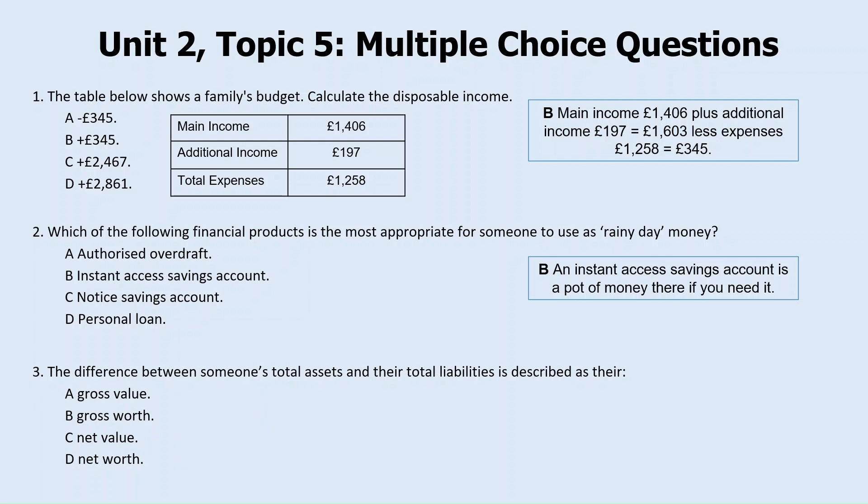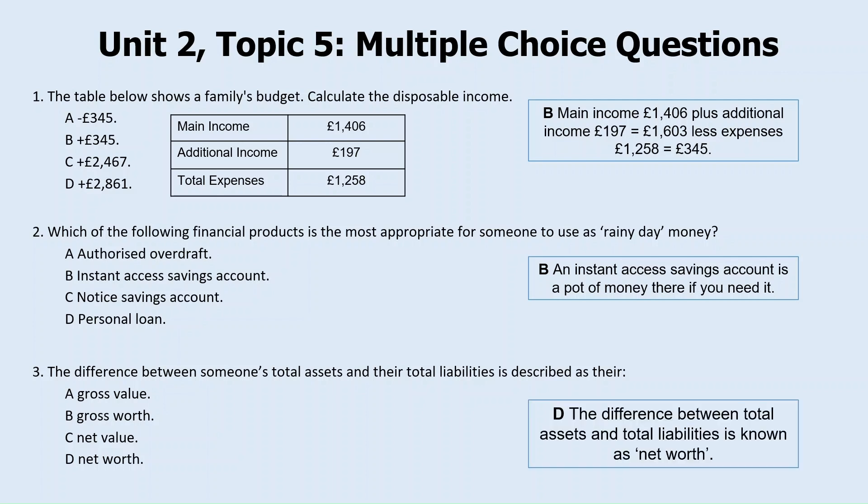Question three: the difference between someone's total assets and their total liabilities is described as their — A. Gross value, B. Gross worth, C. Net value, or D. Net worth. The answer is D. The difference between total assets and total liabilities is known as someone's net worth.